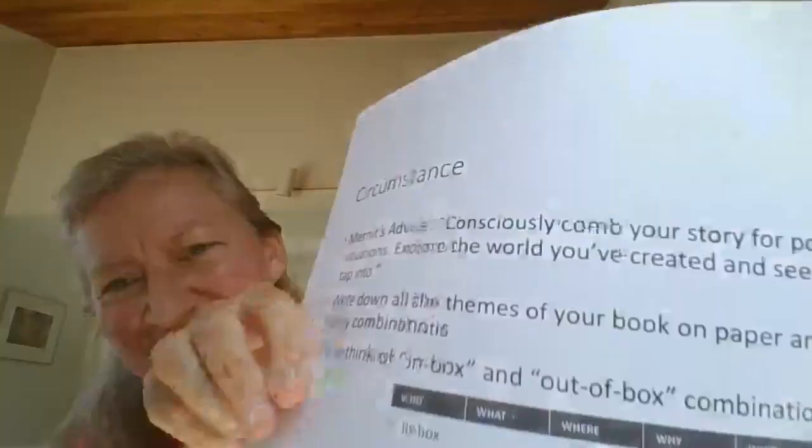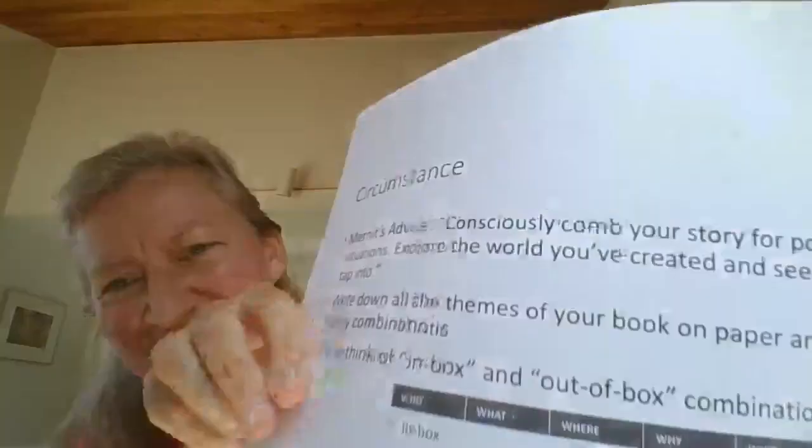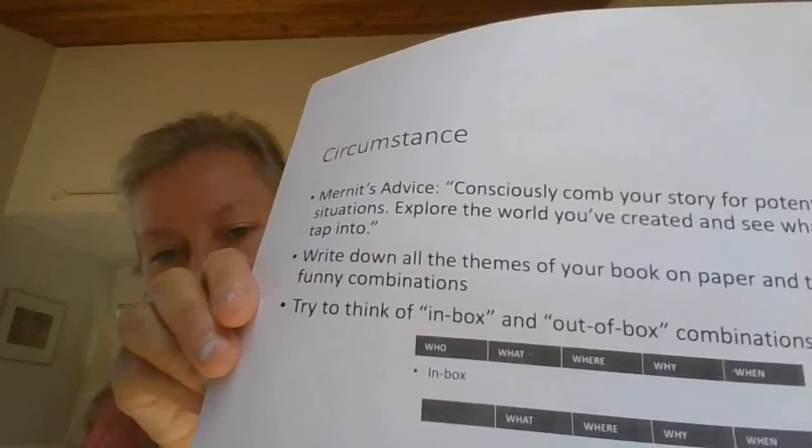Another comedy writing course I took said: try to think of in-box and out-of-box combinations. Here you have a very nice meal — then try to think of out-of-box combinations. Like, what if you had a bunch of crazy elves show up, or you have the Dalai Lama show up, or whatever you can think of that's out-of-box for that dinner party. Your next-door neighbor whom you hate shows up. Try and think of all those combinations, and from there you may brainstorm some funny idea.